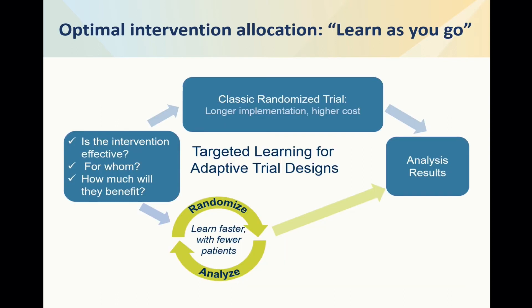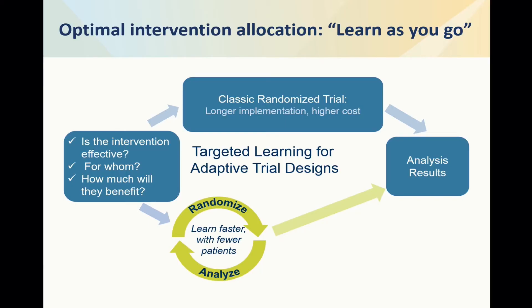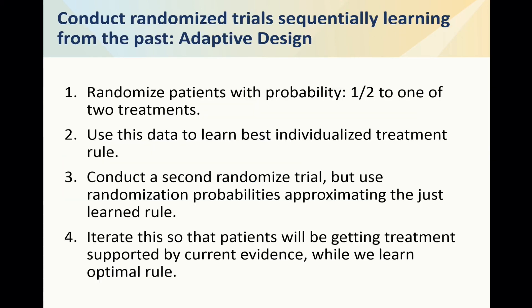The bigger story here is that instead of analyzing 31 randomized trials that hardly talk to each other, what we should be doing is running these sequentially. That's called an adaptive design: you start with a randomized trial, look at the data, learn from it — asking who is benefiting from this treatment — and if you have real evidence, you start assigning the treatment in the next group more according to what you've learned, while still maintaining randomization. Sequentially, you learn the optimal rule for treating — not just what's on average best, but who should be treated and who shouldn't. This is work we have done using sequentially randomized trials with the targeted learning approach.